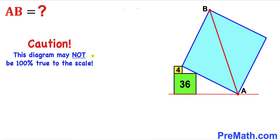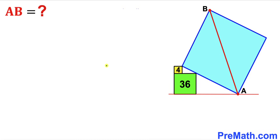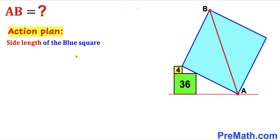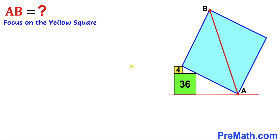Please keep in mind that this figure may not be 100% true to scale. Let's go ahead and get started. Here is our action plan: we are going to calculate the side length of this blue square before we calculate the diagonal AB.